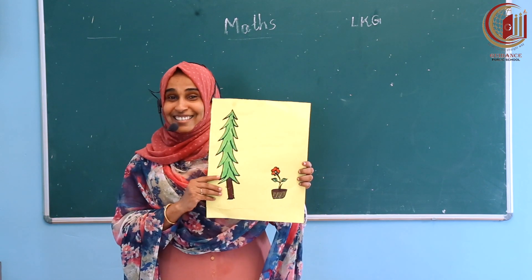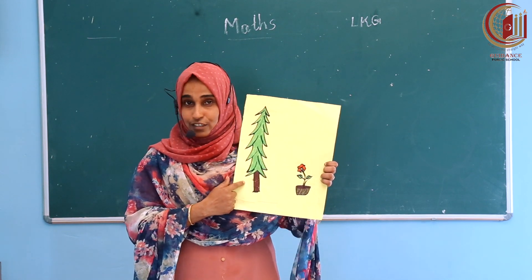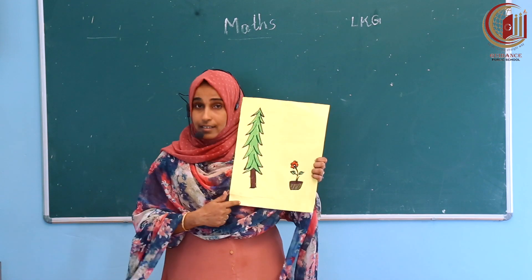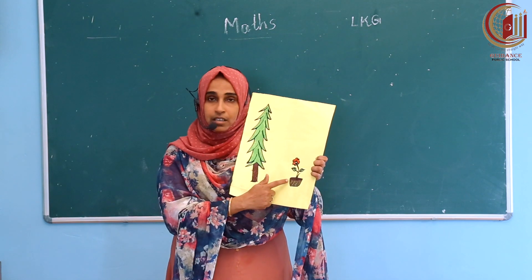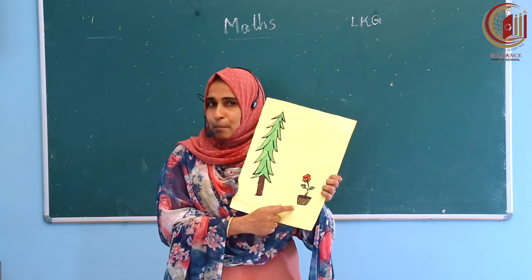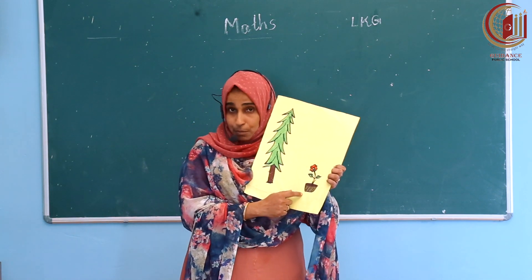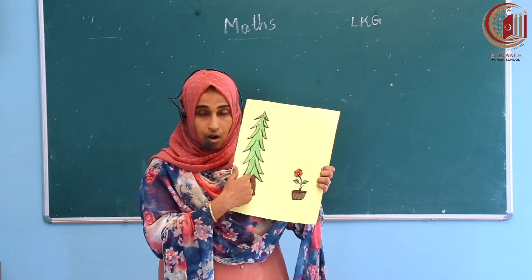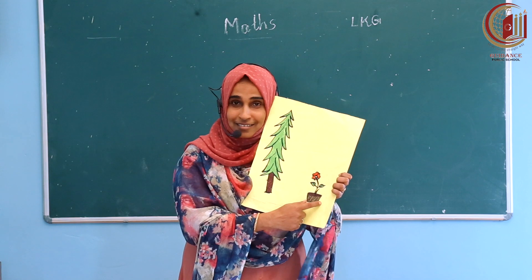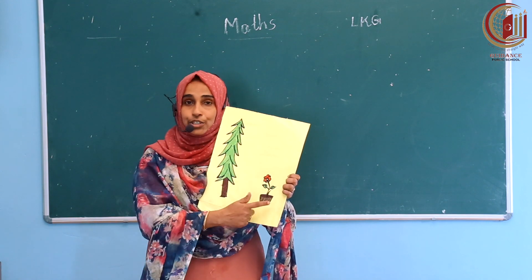What is this? This is a tall tree — this tree is tall. And what is this? This is a plant. This plant is short. Tall and short.